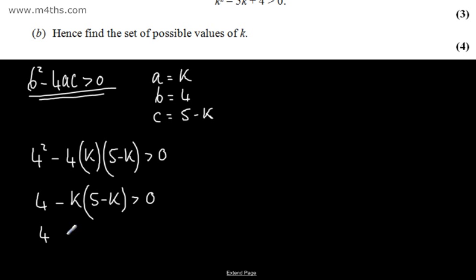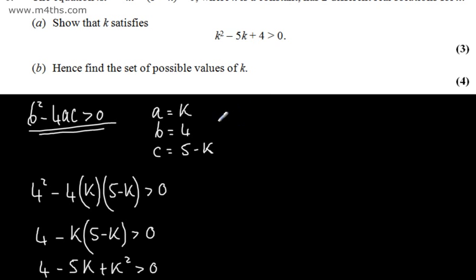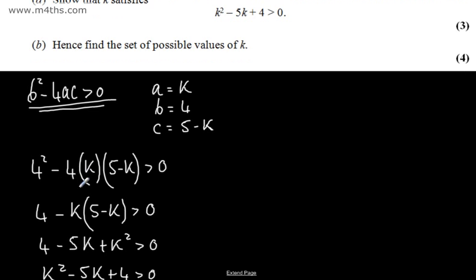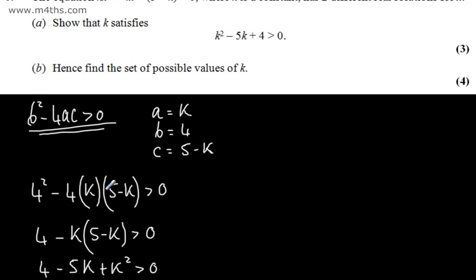Expanding the brackets, we're going to have 4 minus 5k plus k squared is greater than 0. And just rearranging, we can say k squared minus 5k plus 4 is greater than 0. So that's the first part done for three marks. You don't have to divide through by 4 here, you can go ahead and expand it out. Either way, we should be able to show this for three marks.